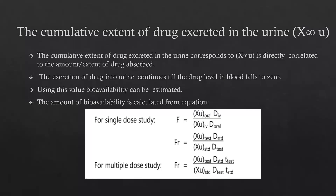Using this cumulative extent of drug in the urine data, bioavailability can be estimated. The bioavailability can be calculated from equations. For single-dose study, absolute bioavailability F equals XU oral multiplied by dose IV, divided by urinary excretion of the drug by IV route multiplied by dose oral.